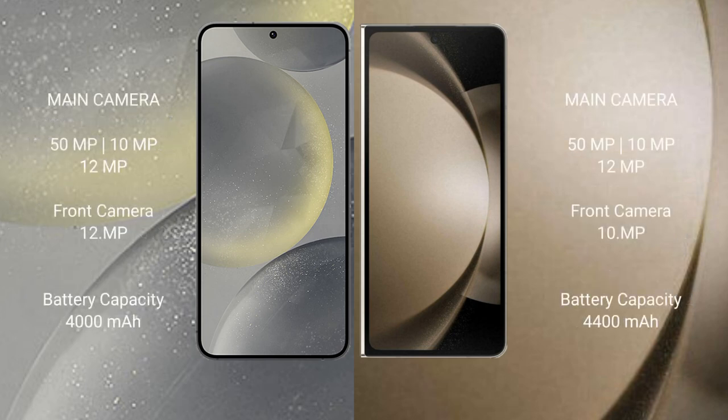Samsung S24 features a triple camera setup: 50MP plus 10MP plus 12MP, with a 12MP front camera. Samsung Galaxy Z Fold 5 also features a triple camera setup: 50MP plus 10MP plus 12MP, with a 10MP front camera.